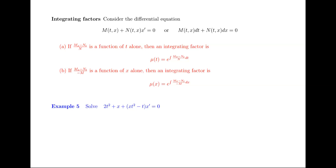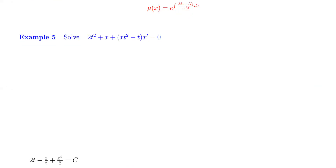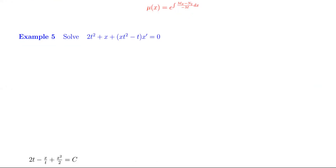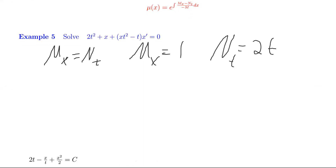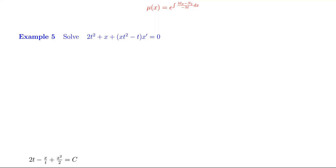Let's take a look at this first example. We want to check if it's an exact equation. If it is, then the partial of m with respect to x would equal the partial of n with respect to t. The partial with respect to x here is 1, and the partial with respect to t is 2tx minus 1. Those are not equal, so this is not exact — we won't be able to find a function where the derivatives match.